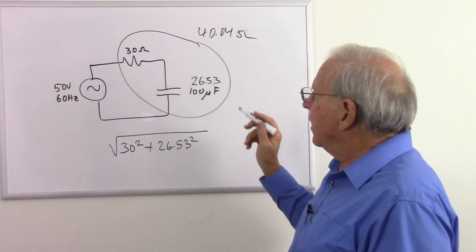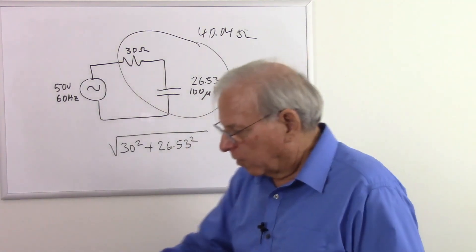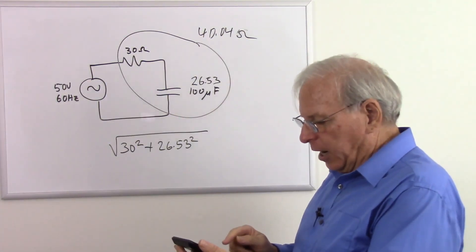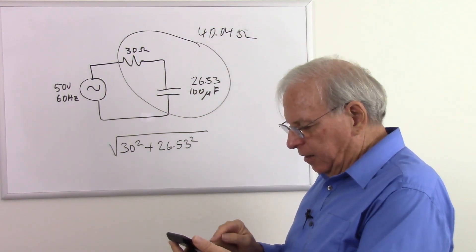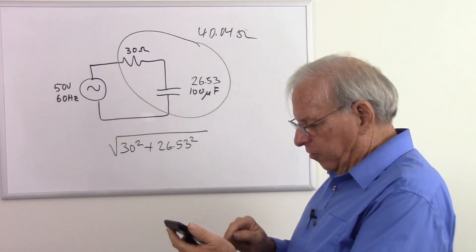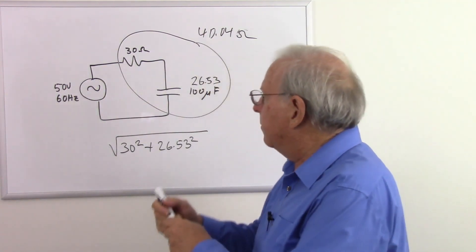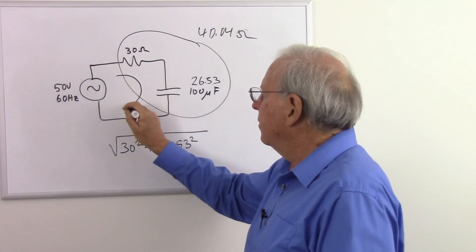Okay, so now I have 50 volts, 40.04 ohms for my impedance. I want to know my current, so I divide that into my voltage, 50 divided by 40.04 equals, and I got 1.25 amps. We're getting closer.